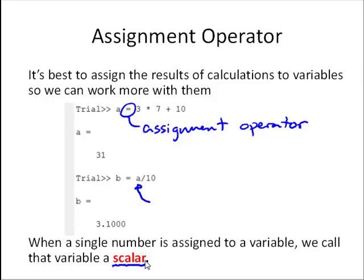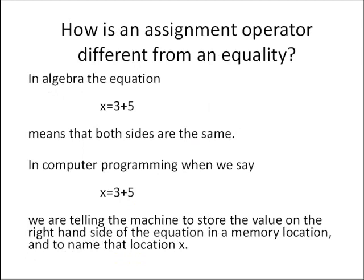So let's talk a little bit about how is assignment different from mathematical equality. In algebra, the equation x equals 3 plus 5 means that both sides are the same. So x equals 8, and 3 plus 5 equals 8. In computer programming, or MATLAB, when we say x equals 3 plus 5, the correct way to read that is that we are telling the machine to store the value on the right-hand side of the equation in a memory location, and to name that location x. So in other words, calculate 3 plus 5 and store that result in a memory location that we are going to call x.